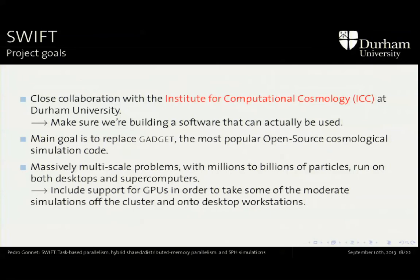All the results I showed were done with this software — it exists and it works. It's a collaboration with the Institute for Computational Cosmology at Durham, a really close collaboration with weekly meetings where we check whether what was implemented is really what was wanted. The answer is usually no, but we arrive iteratively at software that can actually be used. The main goal is obviously to replace Gadget. If you can get 40 times more out of your hardware just by changing the software, the aim is to be able to do the Eagle runs with all the Eagle physics using Swift.